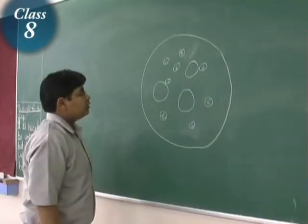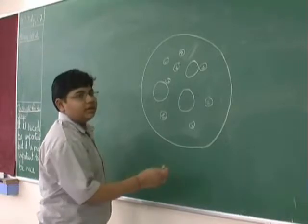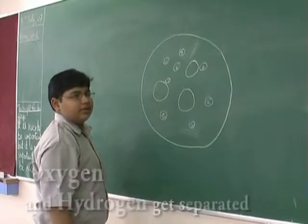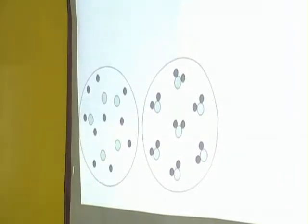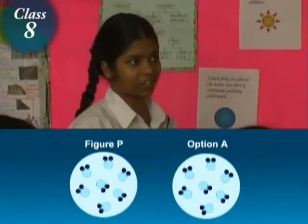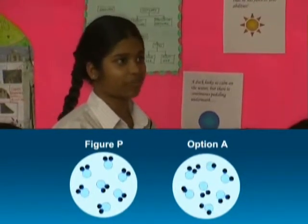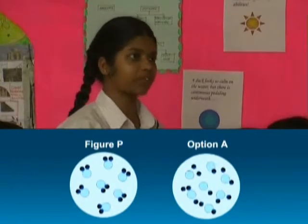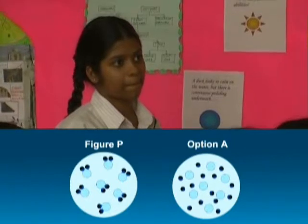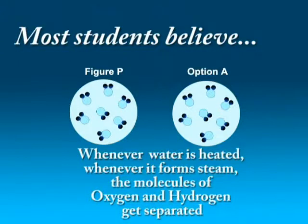When water evaporates due to heat, it changes into the form of air and the oxygen and hydrogen get separated. It looks like the first one. In the water state they combine to form H2O, but in the gaseous state we can't find H2O — we can find H and O separately.